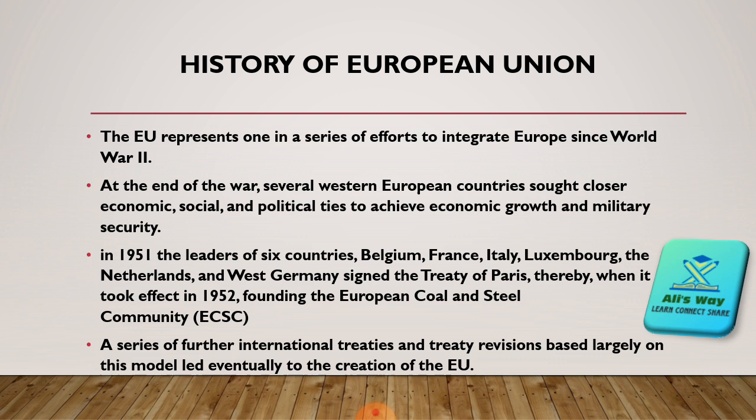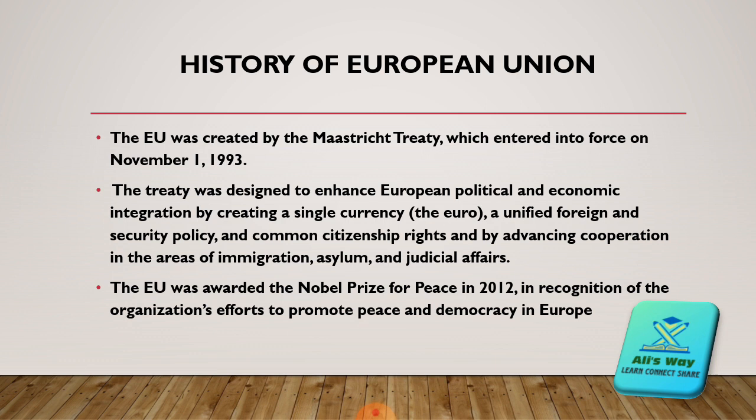The European Union was created by the Maastricht Treaty, which entered into force on November 1, 1993. This treaty gave the charter of the European Union, and apart from this, the treaty has been amended twice — once in 2002 and again in 2009, which is known as the Treaty of Lisbon. The treaty was designed to enhance European political and economic integration by creating a single currency, the euro, a unified foreign and security policy, and common citizenship rights, and by advancing cooperation in areas of immigration, asylum, and judicial affairs. The European Union was awarded the Nobel Prize for Peace in 2012, in recognition of the organization's efforts to promote peace and democracy in Europe.